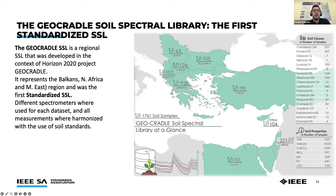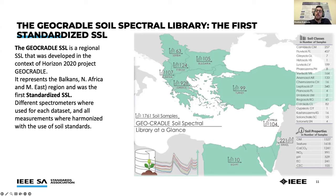The GEOCRAT is a regional soil spectral library developed in the context of the Horizon 2020 GEOCRAT project, representing the Balkans, North Africa, and the Middle East. It was the first standardized soil spectral library. As it was developed using different spectrometers for each subset — unlike LUCAS which used a single spectrometer — the measurements were not directly compatible. For this reason, harmonization techniques based on soil standards were used, making it the first standardized SSL.